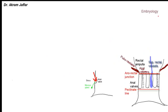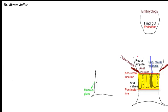The embryological origin of the pectinate line helps explain the differences between the upper and lower parts of the anal canal. The upper part is the terminal part of the hindgut, so it is of endodermal origin. Proliferation of ectoderm closes the caudal part of the anal canal, so the caudal part originates from the ectoderm. The junction between the two parts is marked by the anal membrane.